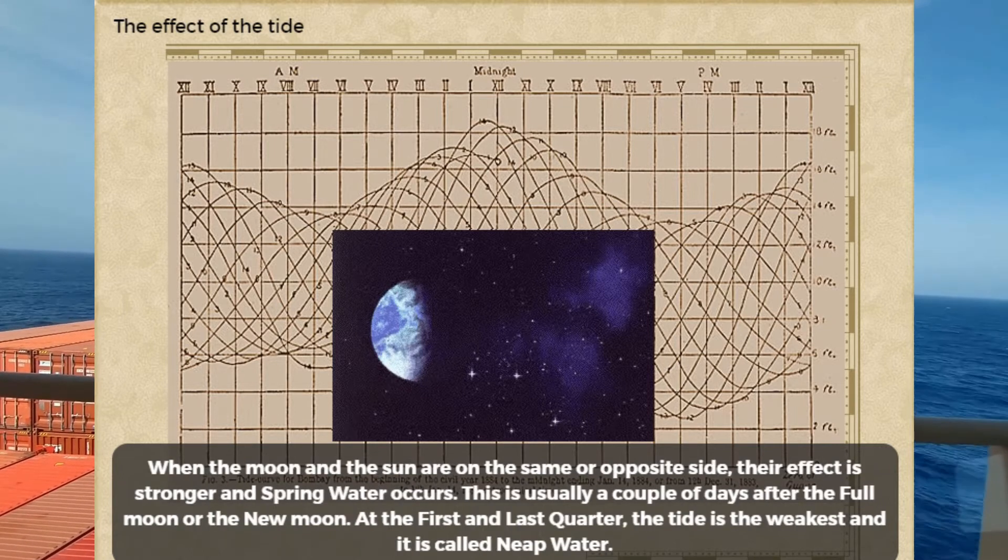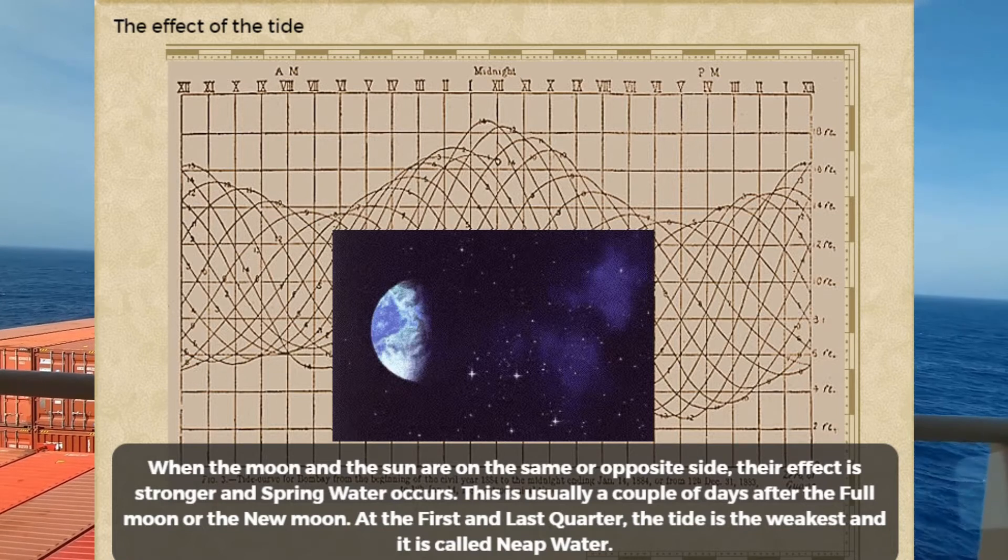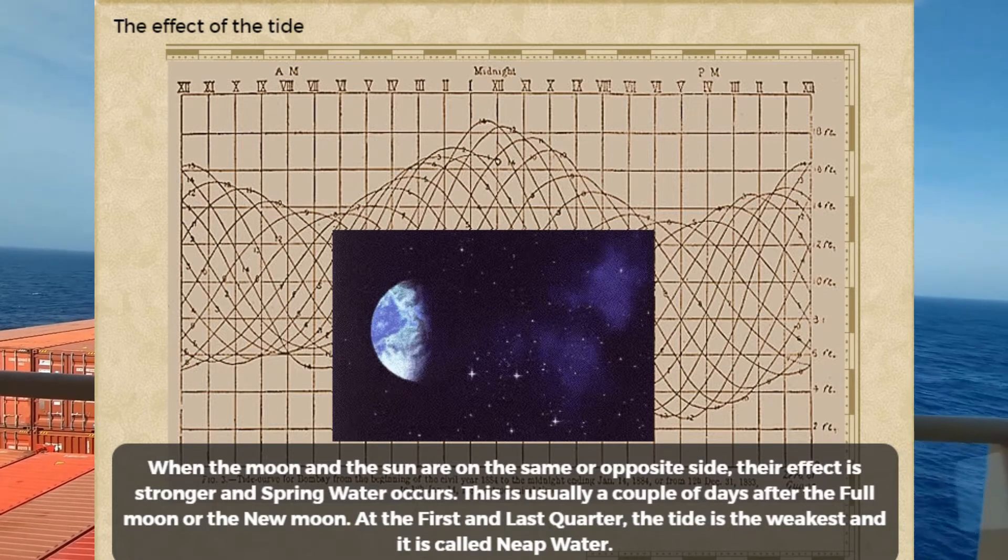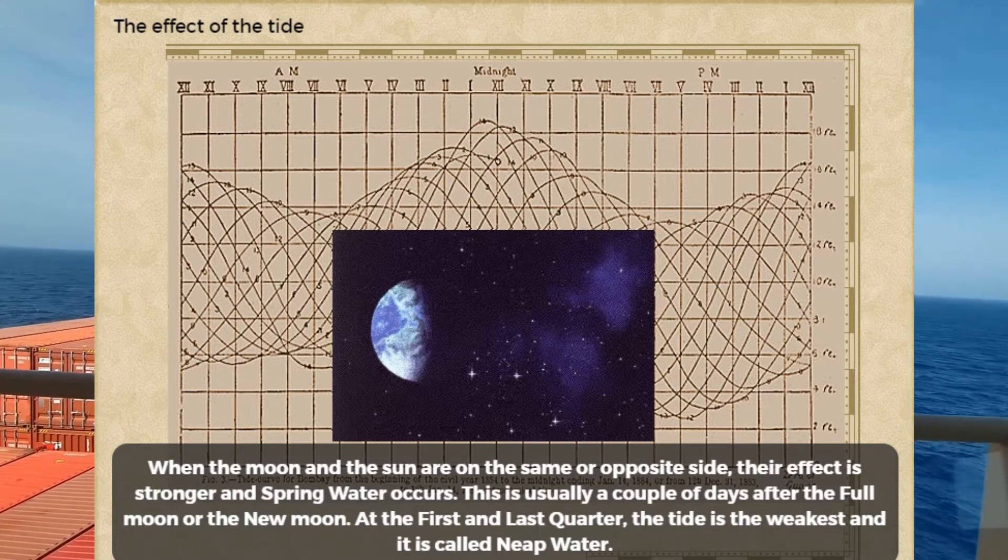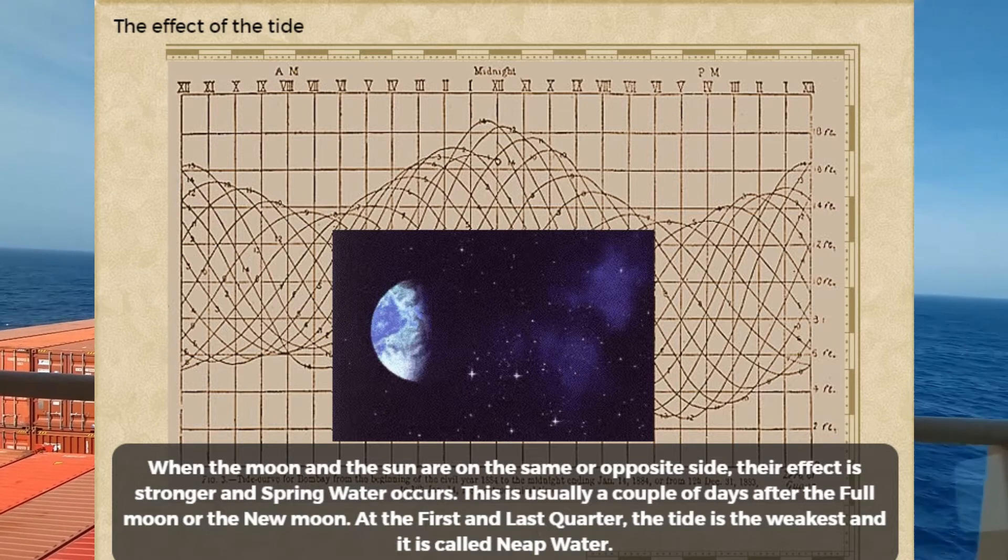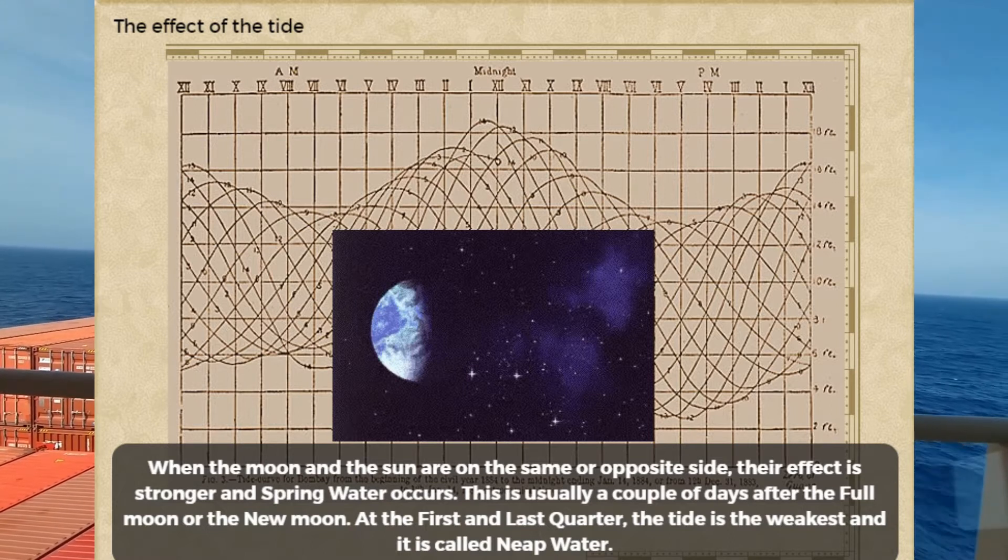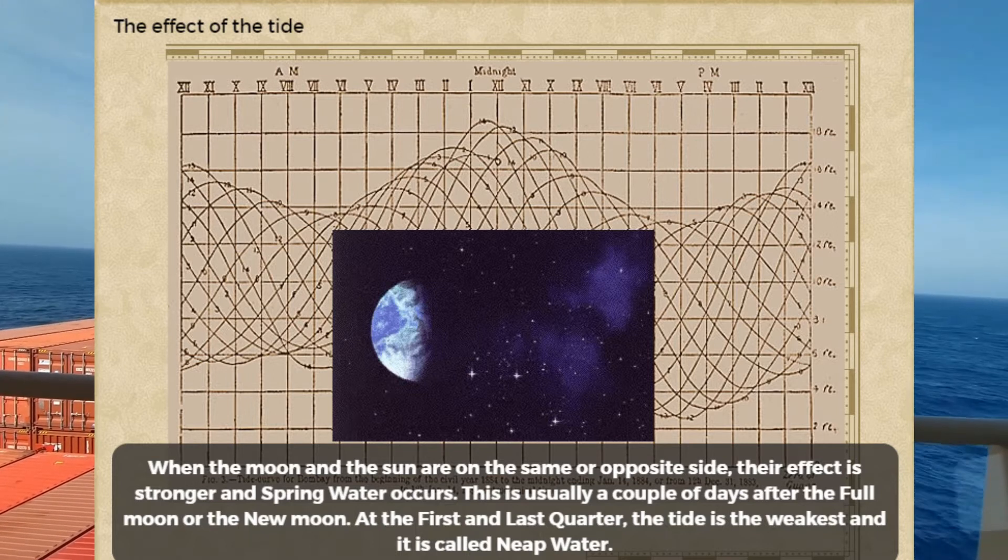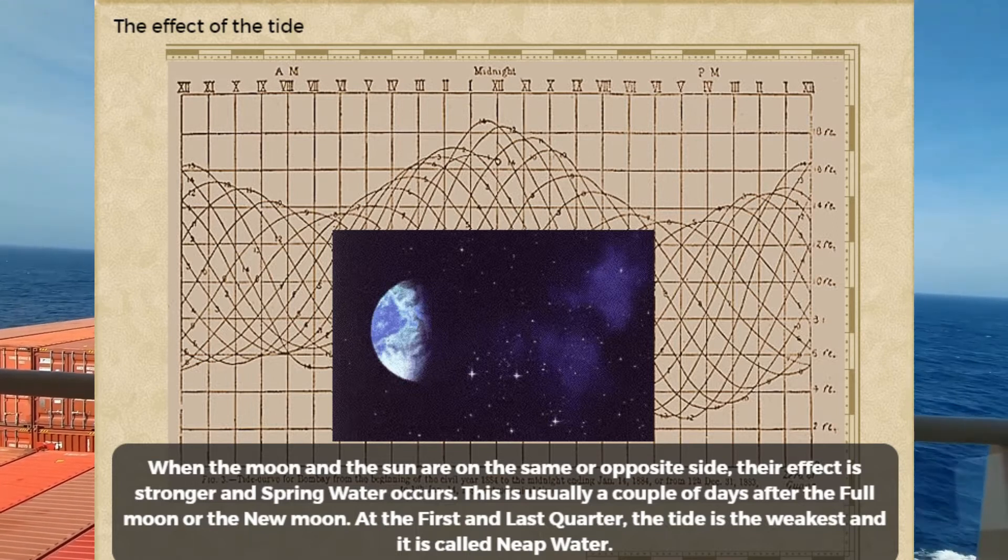When the Moon and the Sun are on the same or opposite side, their effect is stronger and spring water occurs. This is usually a couple of days after the full moon or the new moon. At the first and last quarter, the tide is the weakest and it is called neap water.